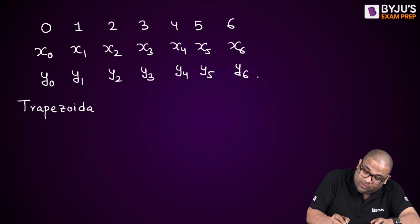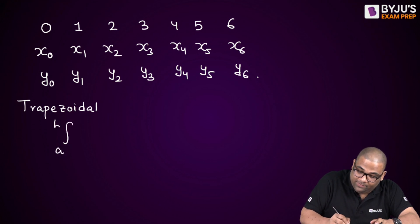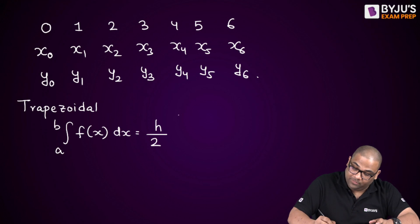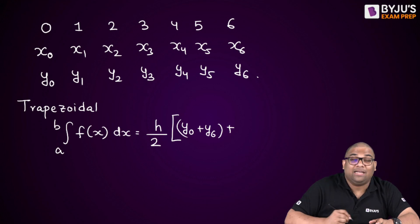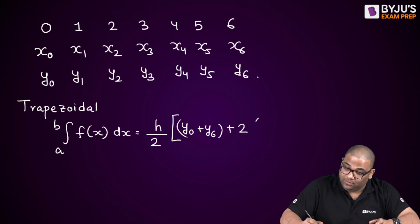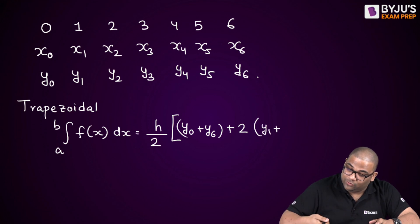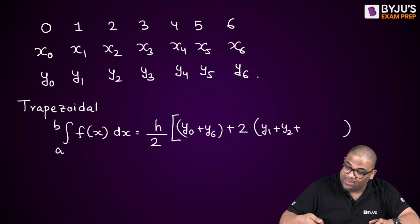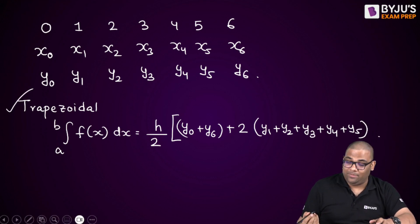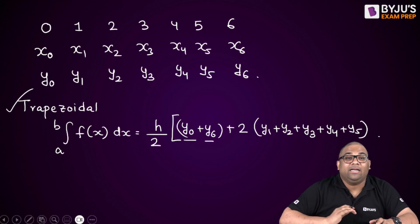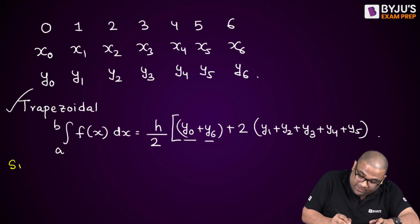Using the trapezoidal rule, the integration equals h/2 × [y₀ + y₆ + 2(y₁ + y₂ + y₃ + y₄ + y₅)]. The first and last terms are y₀ and y₆, and two times all the remaining terms y₁ through y₅. That is the trapezoidal rule — remember: first term plus last term, then two times all the remaining terms.